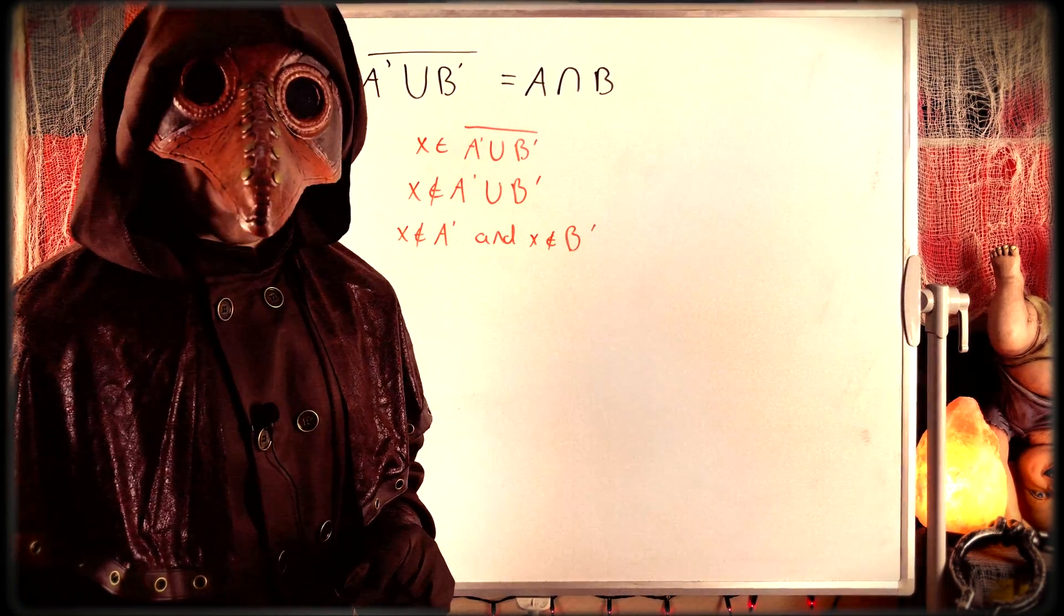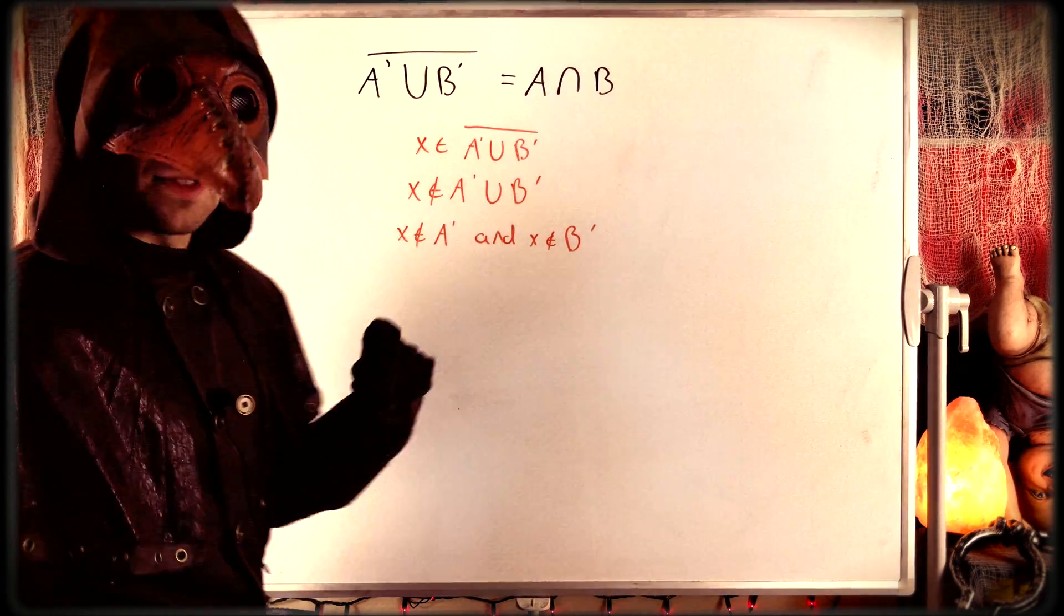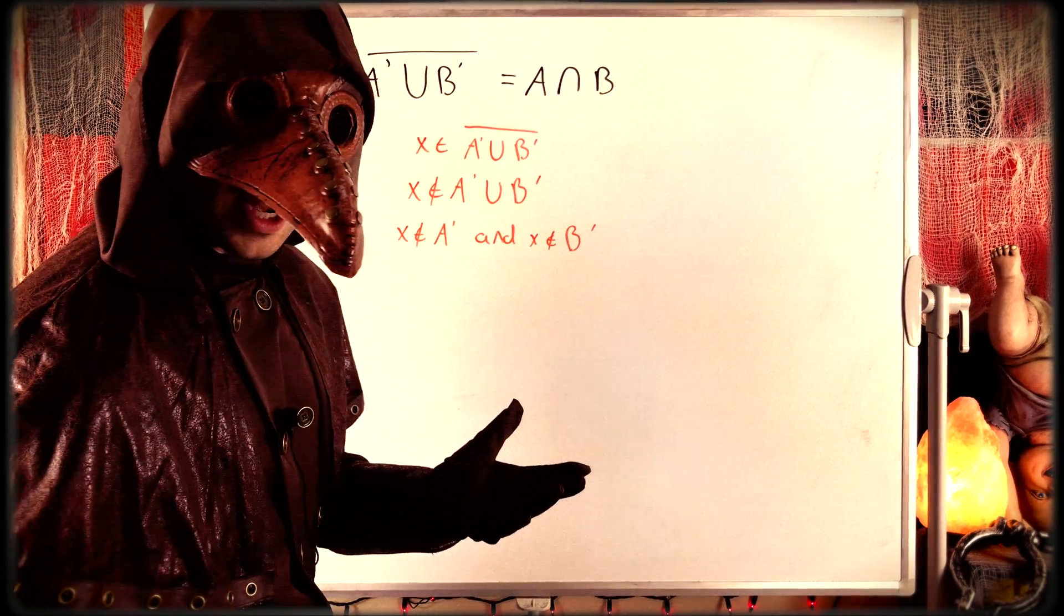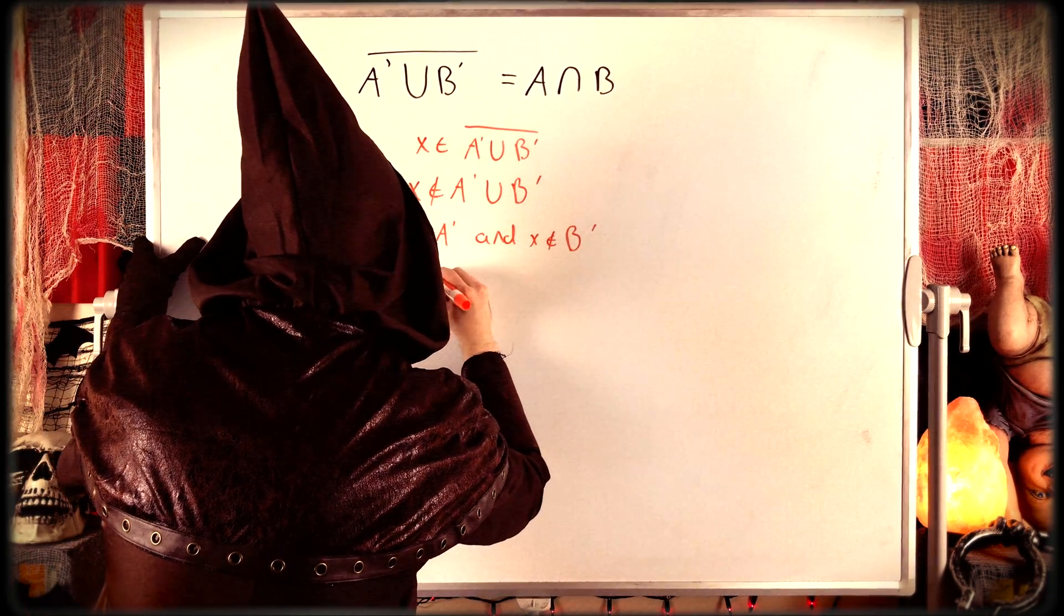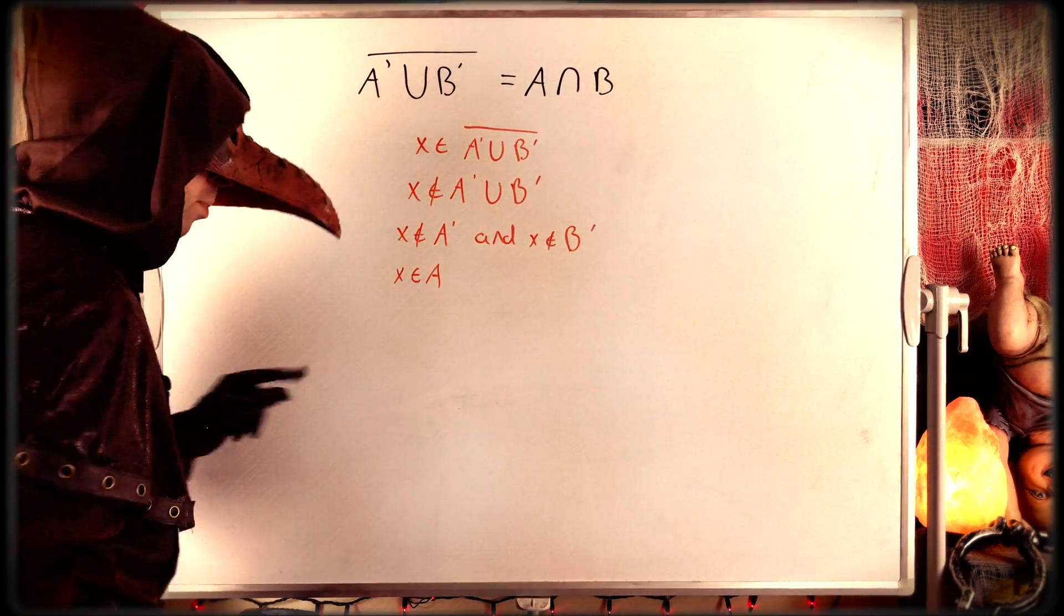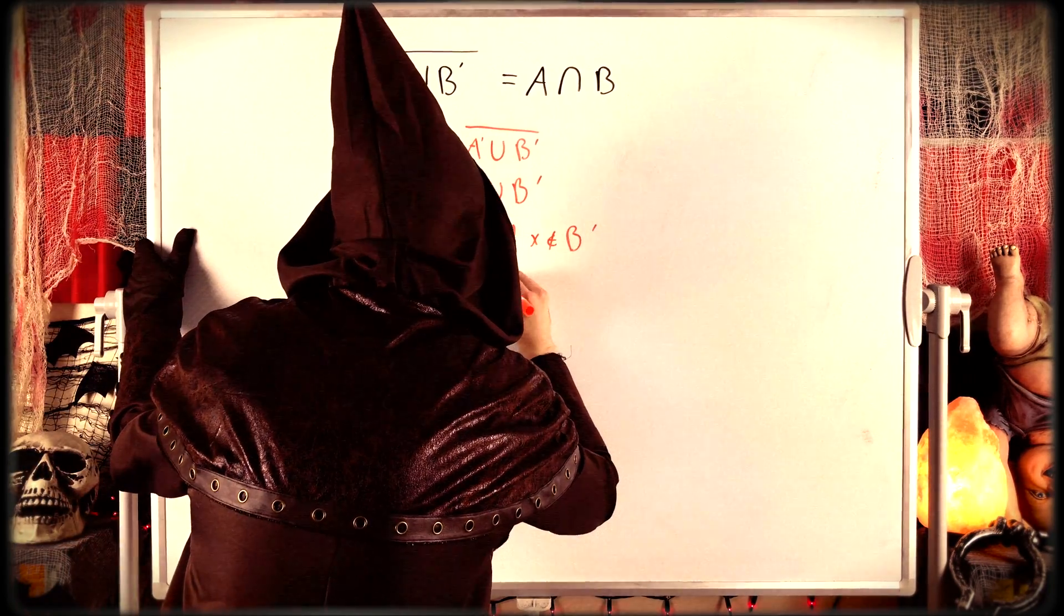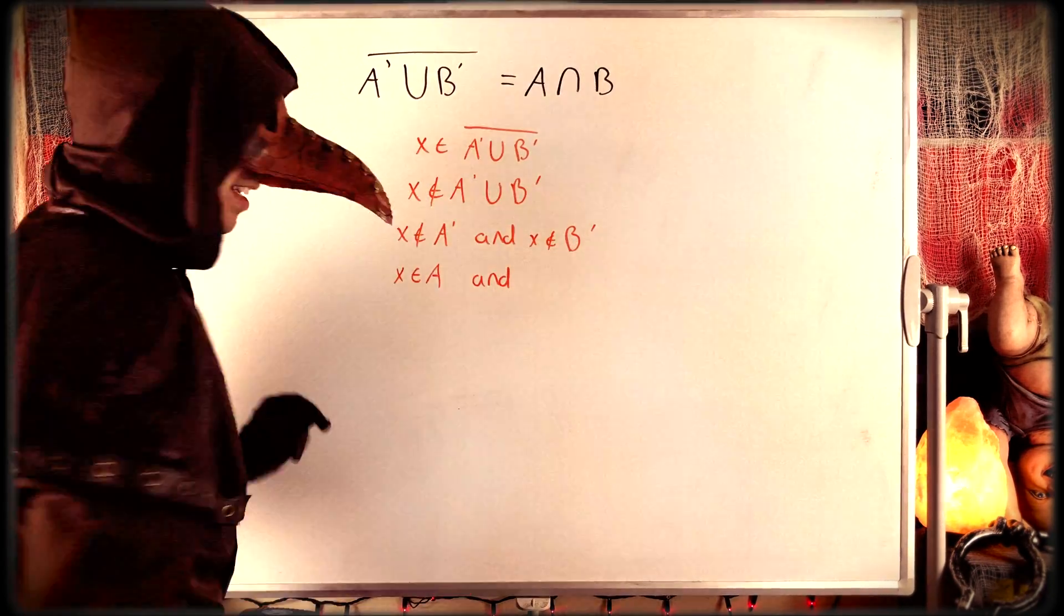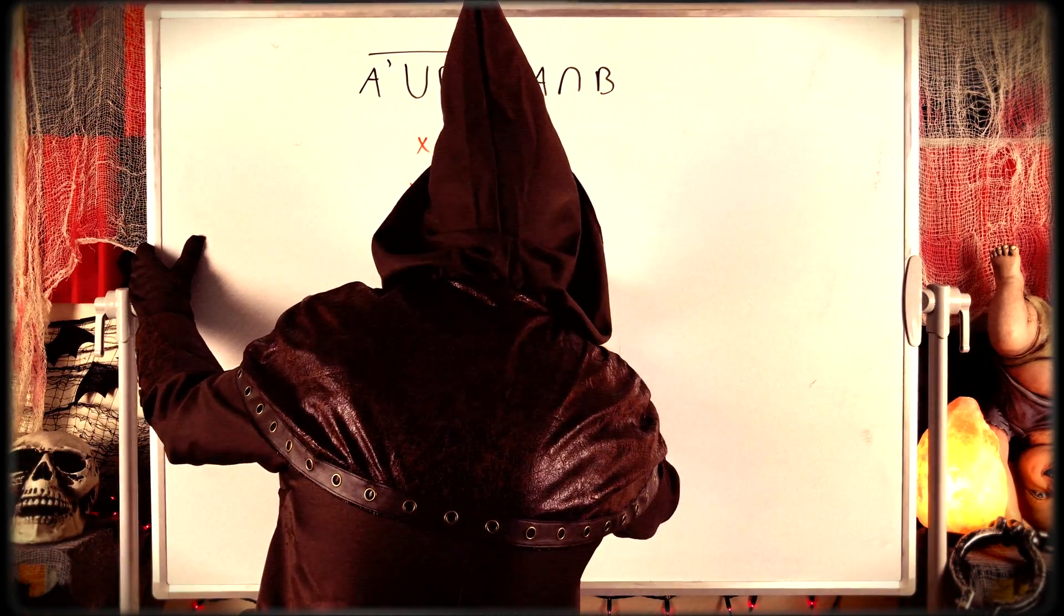Then we just need to apply the definition of complement. If x is not an element of the complement of A, what does that mean? Well, surely that means that x is in the set A. Because it's not in the complement, so it must be in the set A itself. Similarly, since x is not an element of the complement of B, it must be in the set B itself.